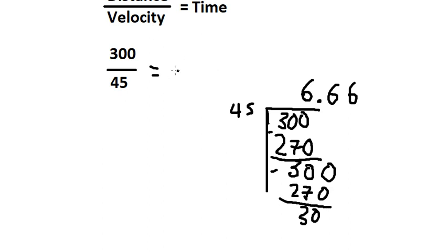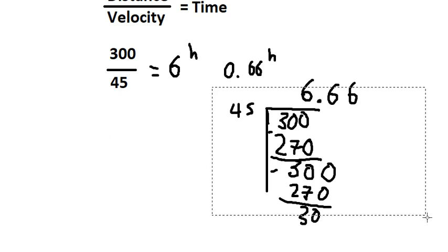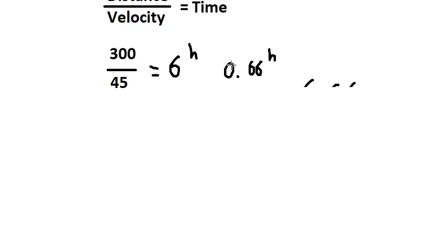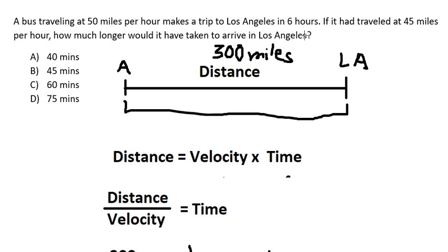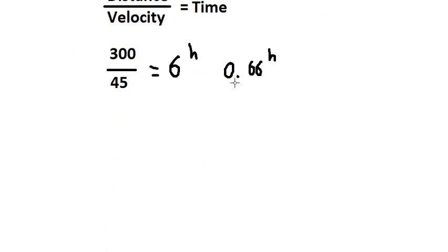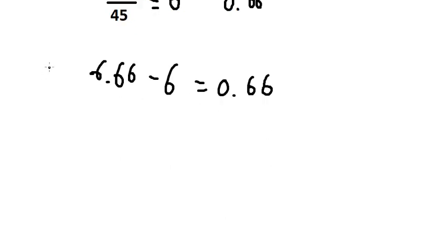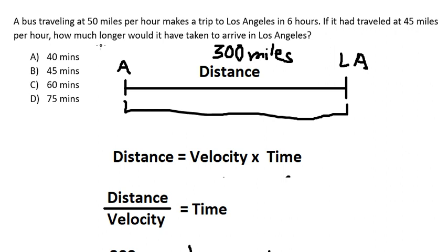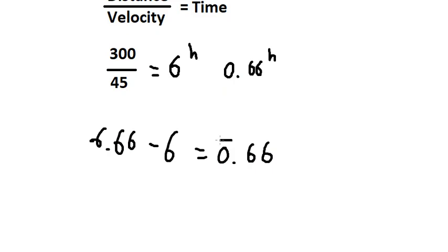So we have 6.66 hours. In this situation, we can see that the difference between 6 hours and 6.66 hours is 0.66 hours. This is the time that would be longer.